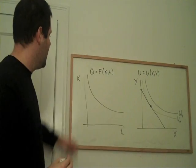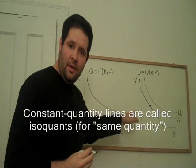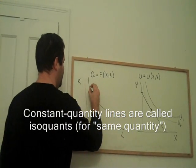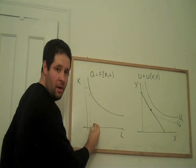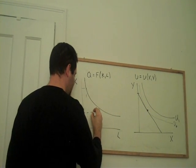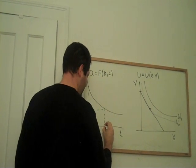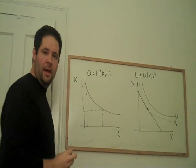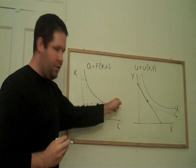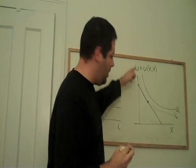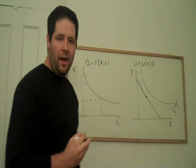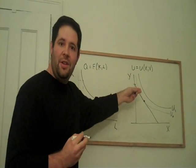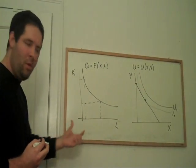And we're going to have constant quantity lines. So if I use this much capital and this much labor, I can produce just as much as using this much capital and that much labor. And you can see that there's a similar trade-off as we have over here if we think about if I have this much X and that much Y, I can produce this much utility. Just think about it the same way here.